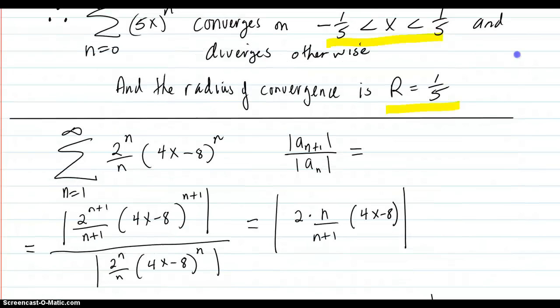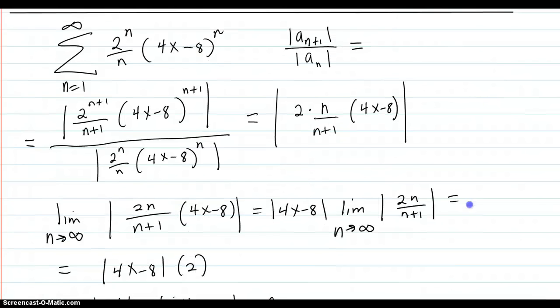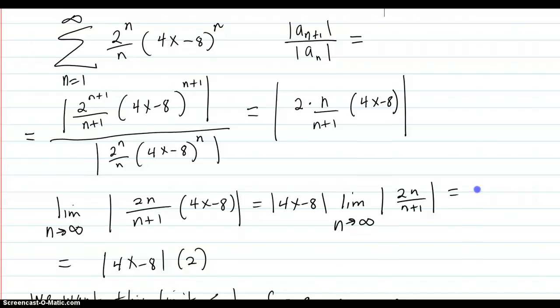Here's another example, this one right here. So we do our ratio test, and you put the n plus 1 in there, of course. And you work it out. You get to here.